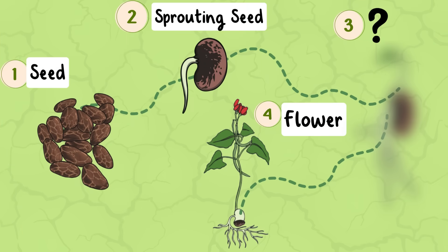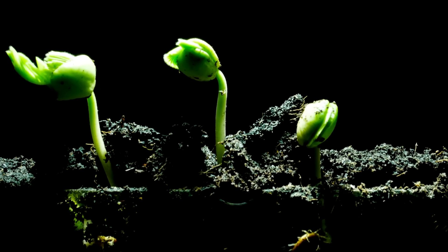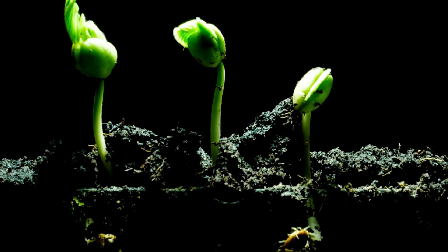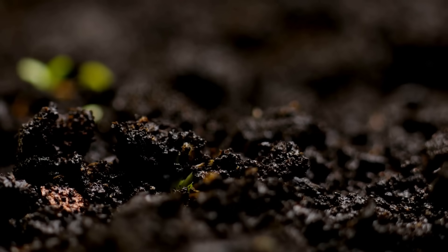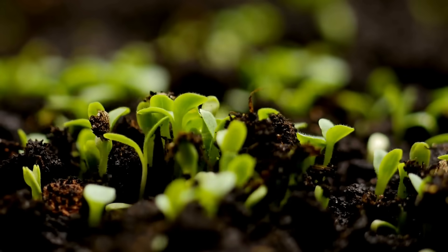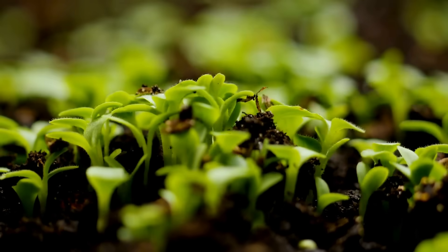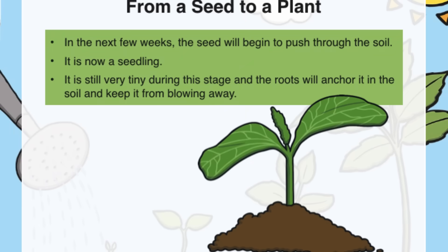What comes third in a plant's life cycle? It's the seedling! In the next few weeks, the seed will begin to push through the soil — it is now a seedling. It is still very tiny during this stage, and the roots will anchor in the soil and keep it from blowing away.